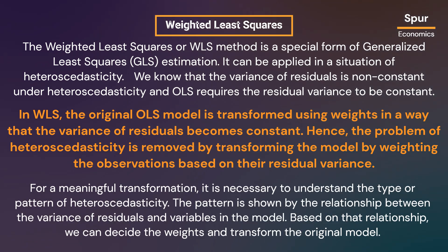Hence, the problem of heteroskedasticity is removed by transforming the model and weighting the observations based on their residual variance. For a meaningful transformation, it is necessary to understand the type or pattern of heteroskedasticity, which is shown by the relationship between the variance of residuals and the variables in the model. Based on that relationship, we can decide the weights and transform the original model.